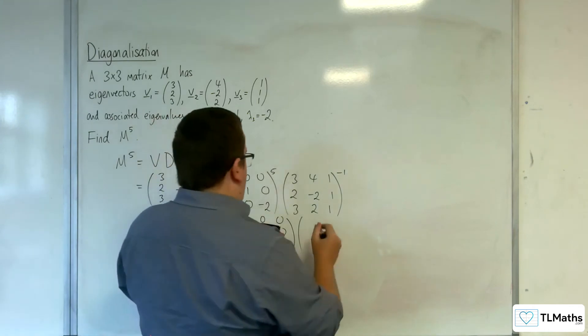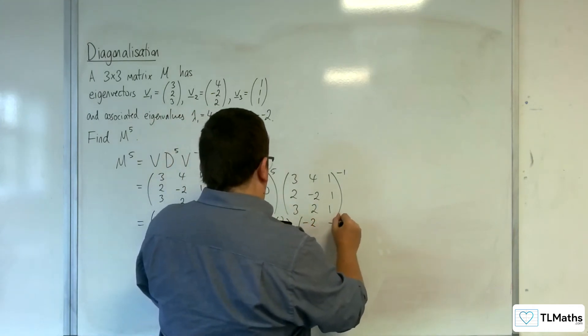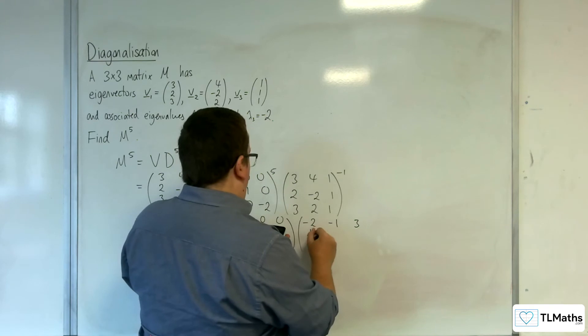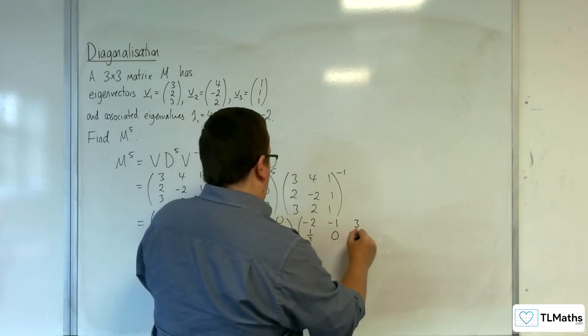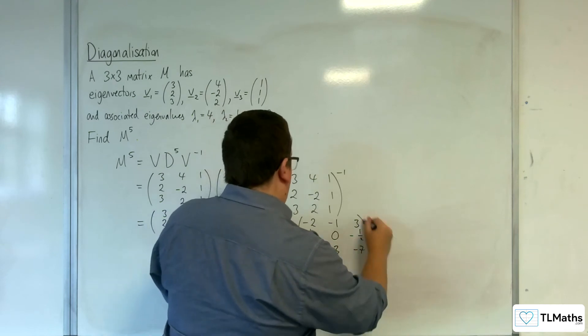so we get minus 2, minus 1, 3; we get 0.5, so 1 half, 0, minus 1 half; 5, 3, and minus 7.